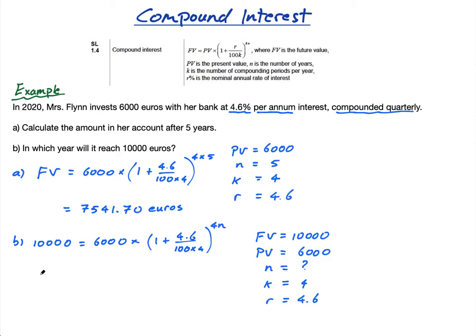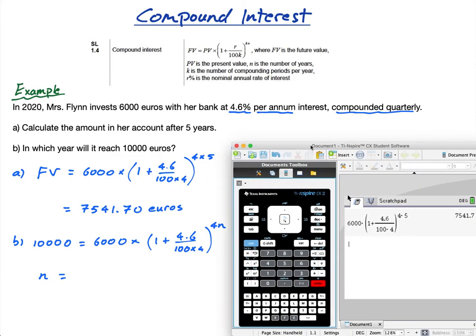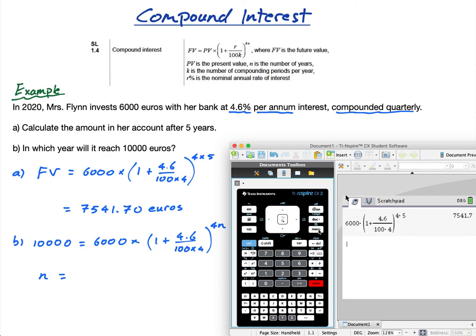But I can find out with my wonderful GDC. Let's go to Algebra, Numerical Solve. So write out the equation: 10,000 equals 6,000 times [1 plus (4.6 over 400)] to the power of—I'm just going to write 400 now, guys, 4 times 100.